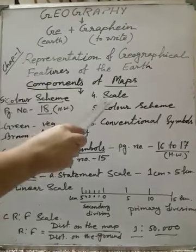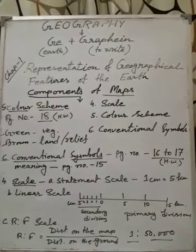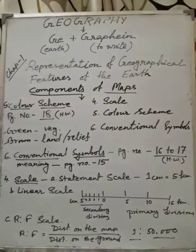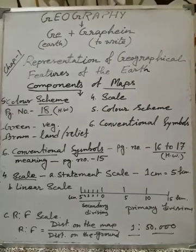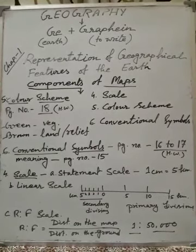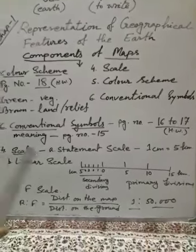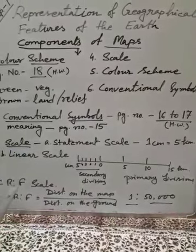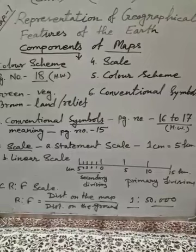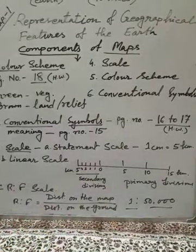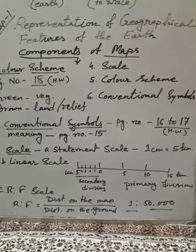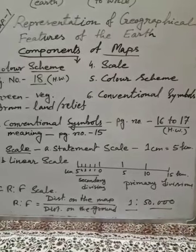The last component is number 4 — scale. A scale is a small instrument that helps us measure the distance between two points on a map. There are three different methods to represent scale on a map. The first is statement scale: one information is directly written, like 'one centimeter is equal to five kilometers,' meaning one centimeter on your map equals five kilometers on the ground. That statement is written on the map.